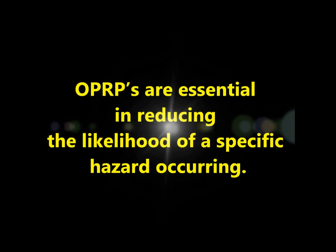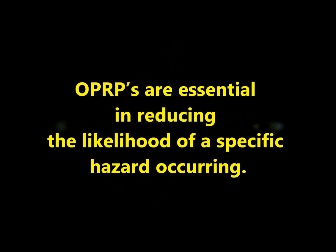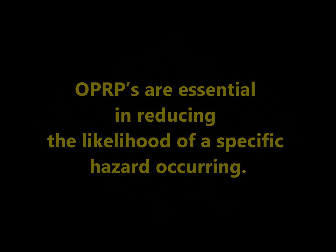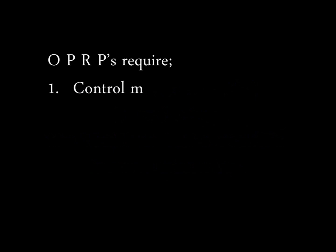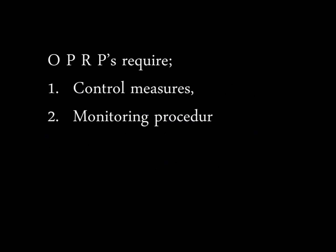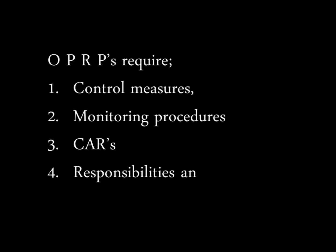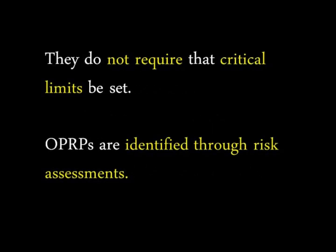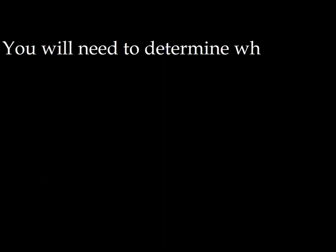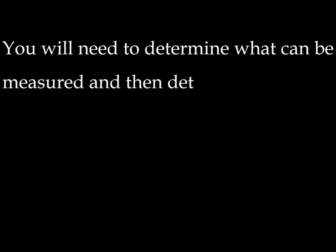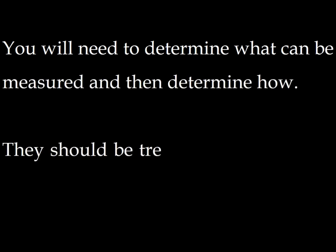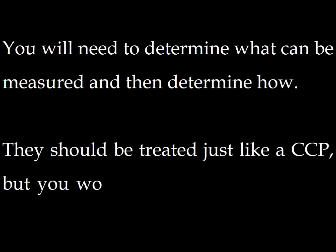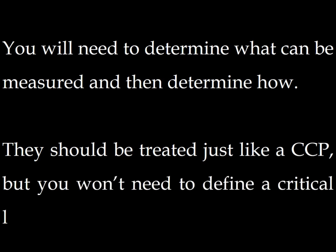OPRPs are essential in reducing the likelihood of a specific hazard occurring. OPRPs require control measures, monitoring procedures, corrective actions, responsibilities, and records. They do not require that critical limits be set. OPRPs are identified through risk assessments. You will need to determine what can be measured and then determine how. They should be treated just like a CCP, but you won't need to define a critical limit.